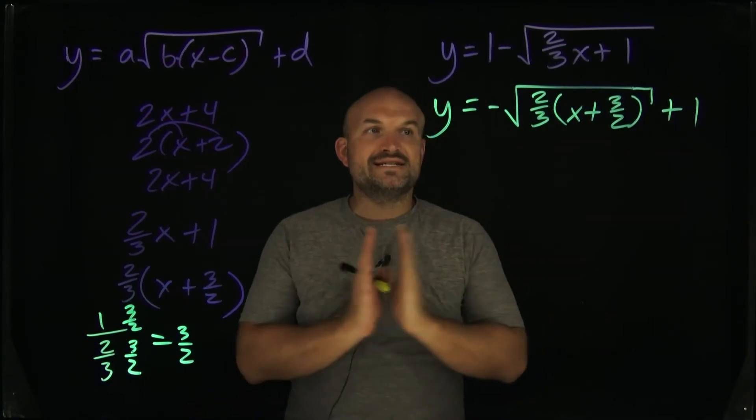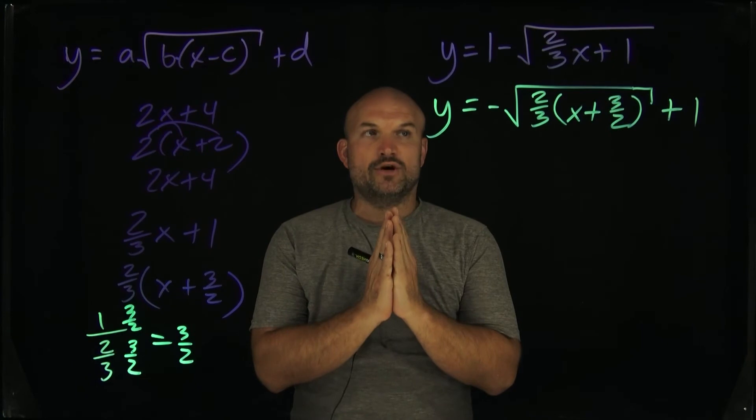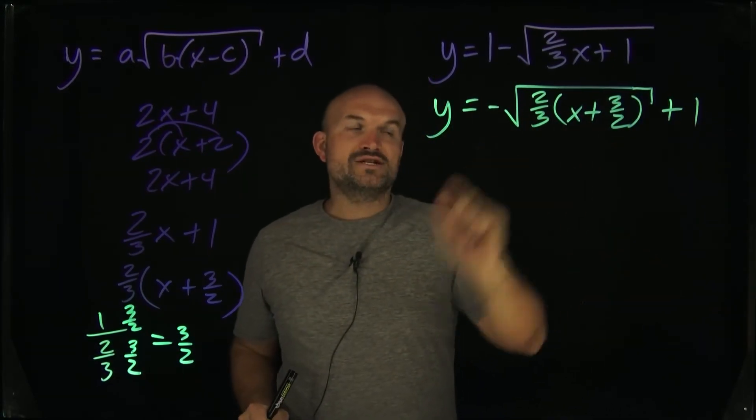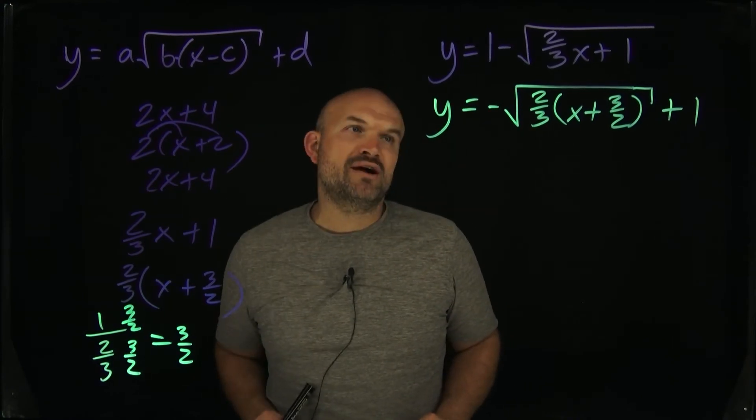Then inside here, we have a horizontal, let's see, it's less than between zero and one, it's going to be a horizontal stretch. So we have a horizontal stretch of two-thirds, as well as a horizontal shift up three halves. What are we going to graph first?